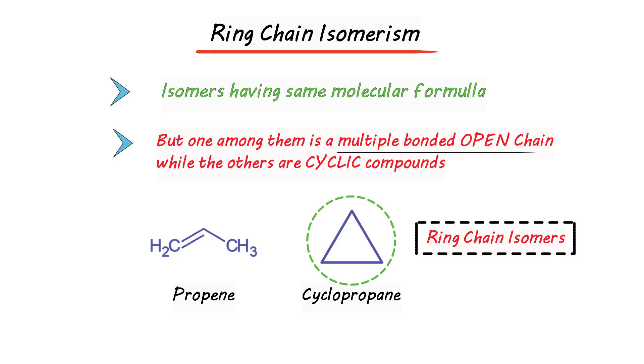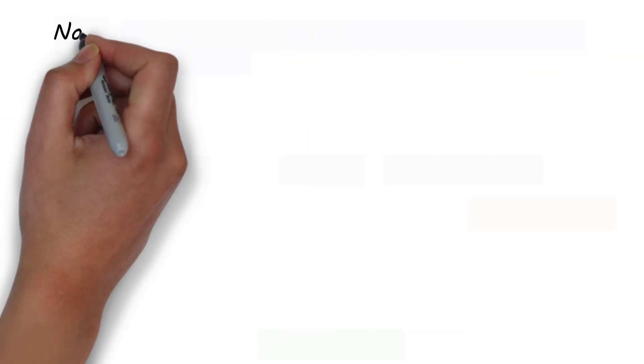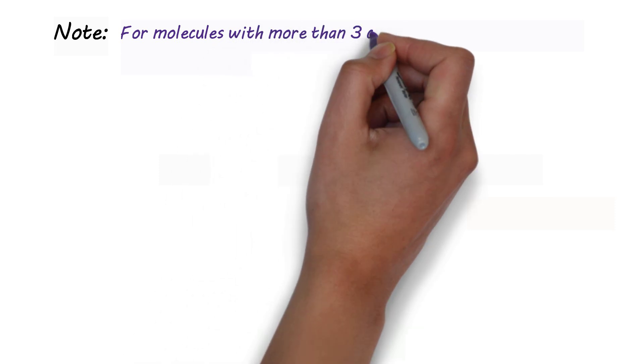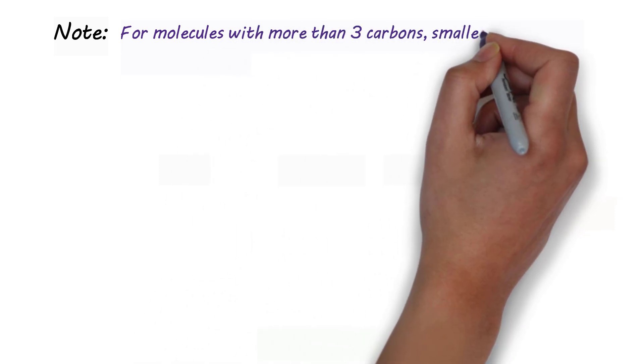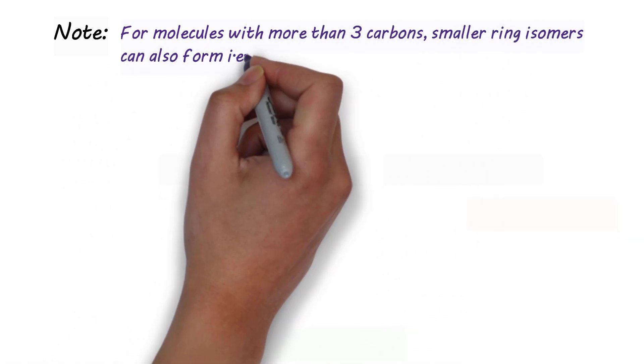They have the same deficiency of hydrogen atoms. A point to be noted: for molecules with more than three carbons, smaller ring isomers can also form.